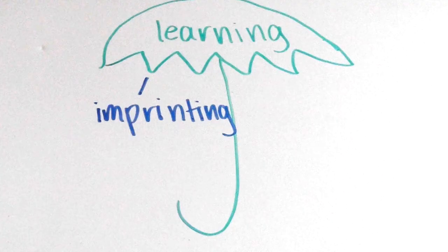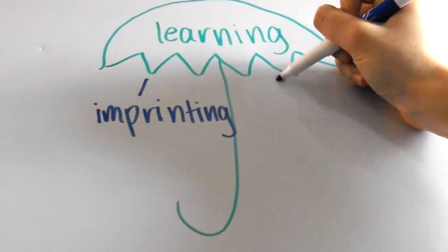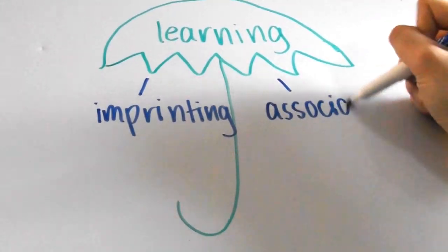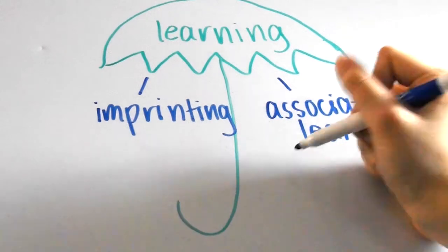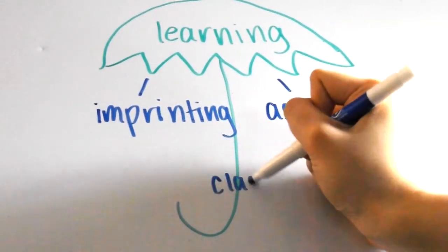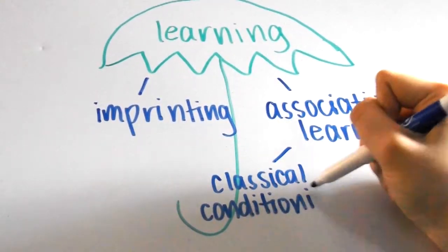Let's go back to the concept map of learning. So we have the umbrella of learning and imprinting branched under it. One more branch that I'm going to add is associative learning, which is when animals learn to associate one thing with another. This further divides into two types, classical conditioning and operant conditioning.